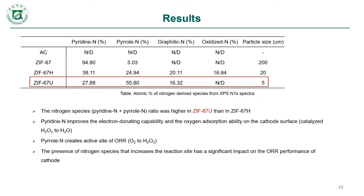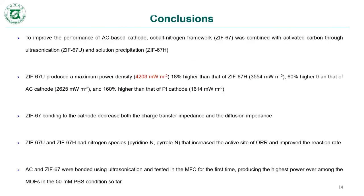These nitrogen species — specifically pyridinic N species — improve the electron donating capacity and improve the oxygen adsorption ability on the cathode surface, which helps catalyze hydrogen peroxide to water. Other important species are also pyridinic N species, which create active sites for the oxygen reduction reaction and help reduce oxygen to hydrogen peroxide. In summary, the presence of nitrogen species increased the reaction sites on the cathode surface, which had a significant impact on the oxygen reduction performance of the cathode.